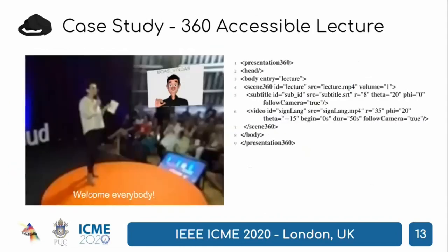The second application, 360 Accessible Lecture, is an example following the accessible 360 video scenario. In this application, a 360 video lecture is extended with subtitles and sign language, and both have the follow-camera attribute set to true so that they follow the user's head motion.